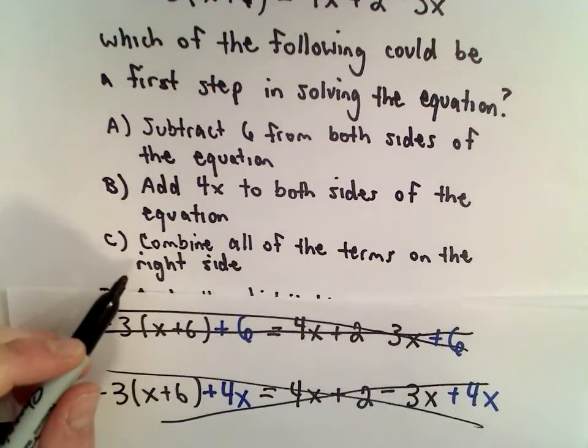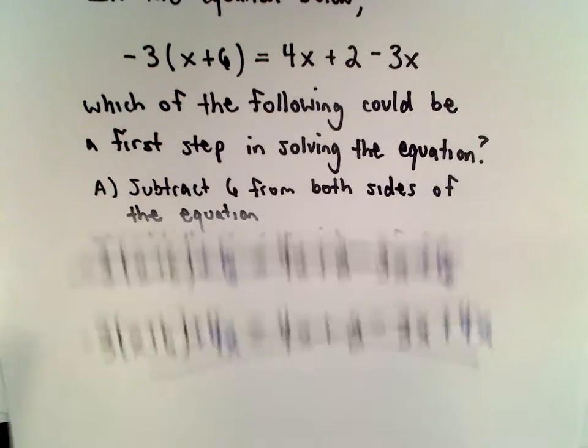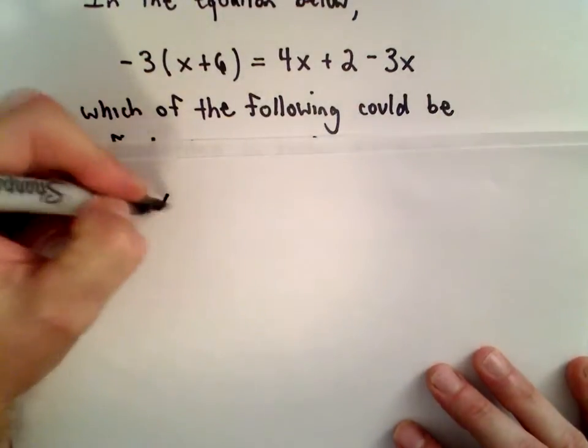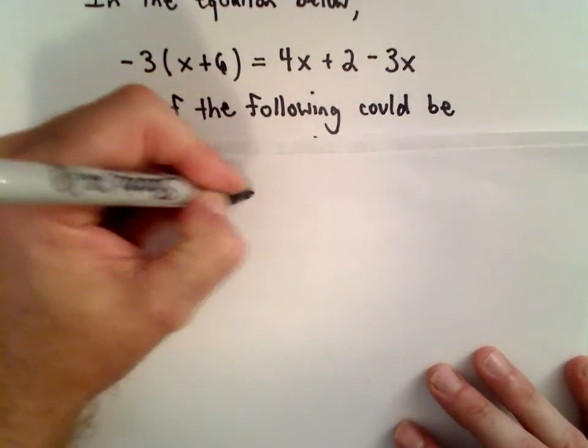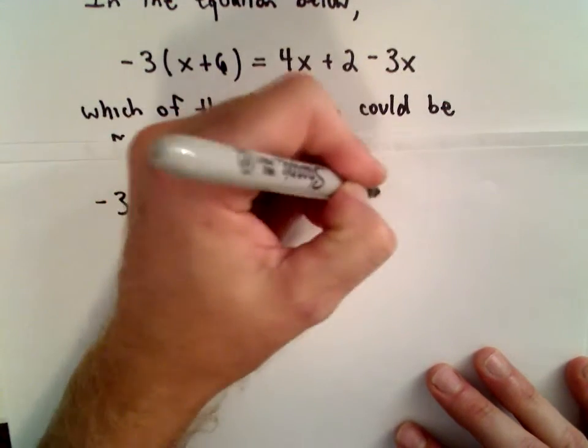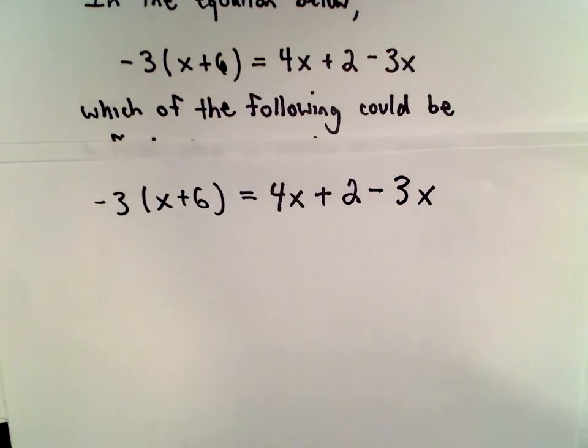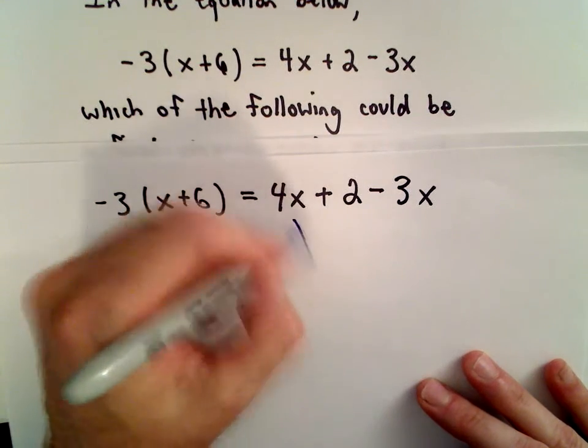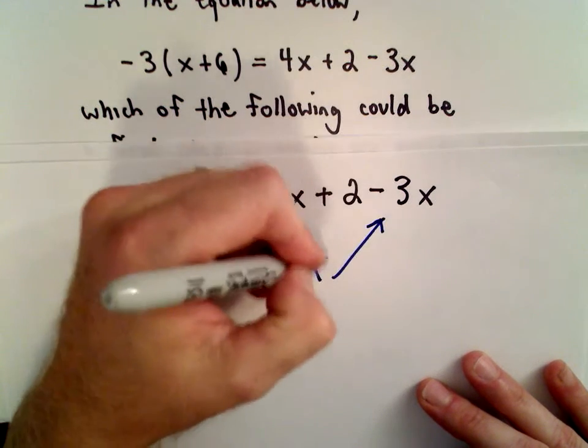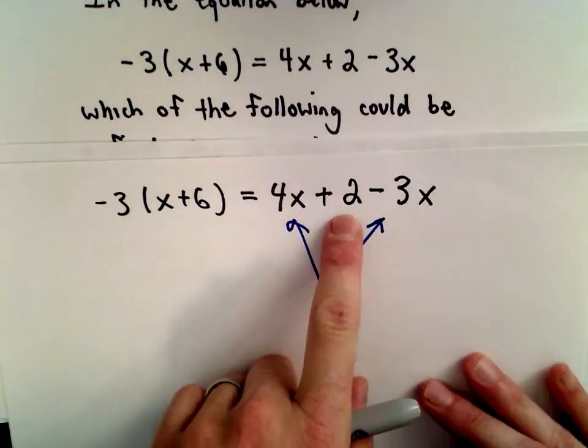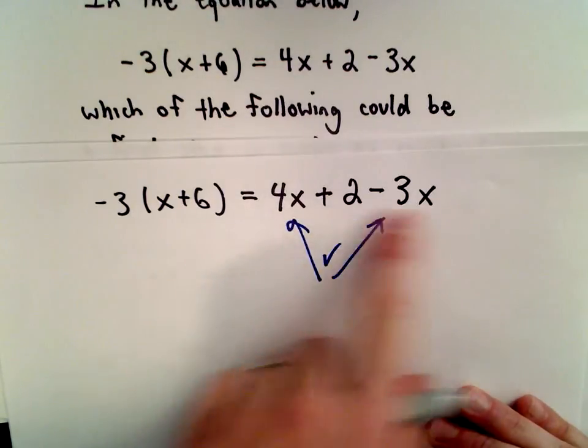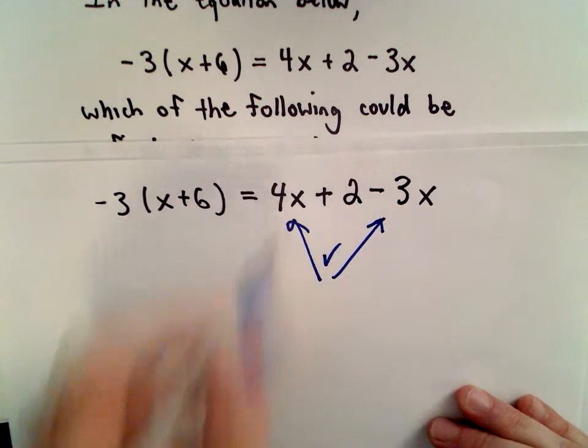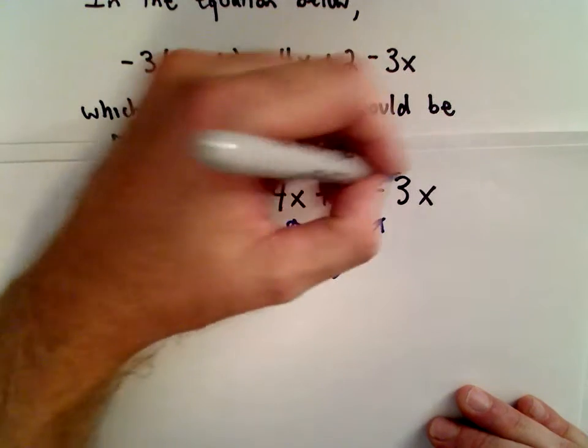Part C says combine all the terms on the right side of the equation. When I first saw that, I thought maybe that's the thing to do. But the problem is in the terminology. It says combine all of the terms. The 4x and the negative 3x, we could combine those - those are like terms, they both involve x. But 2 is just a constant. There's not an algebraic way to combine all three of those terms together. That's not going to work either.